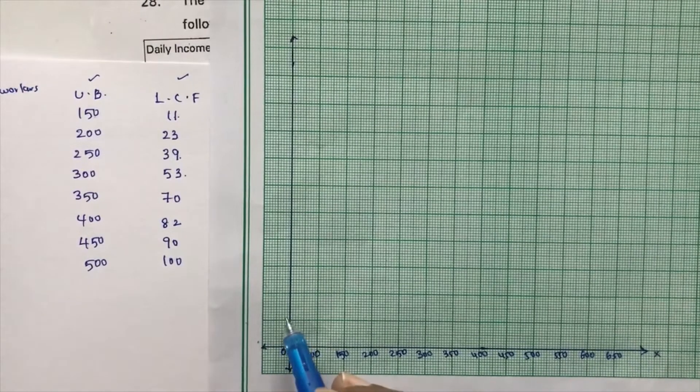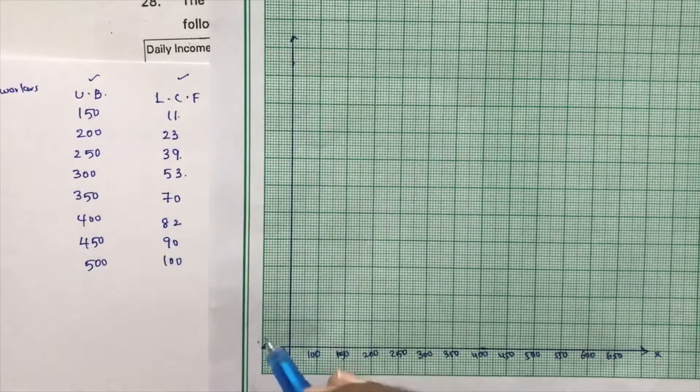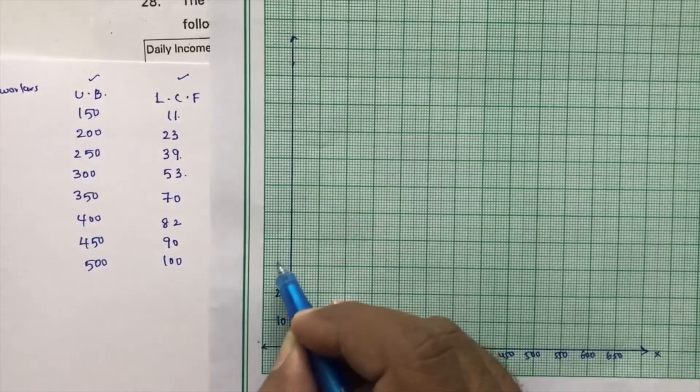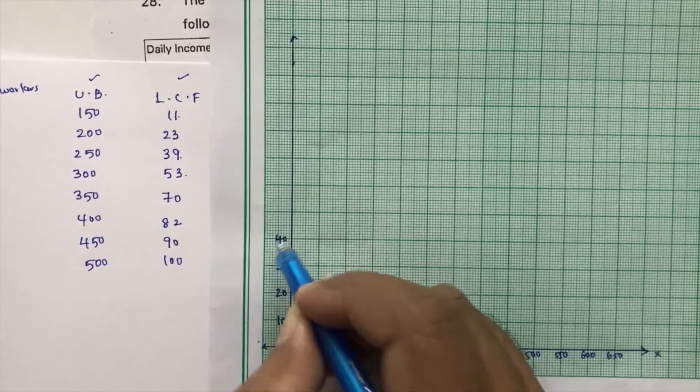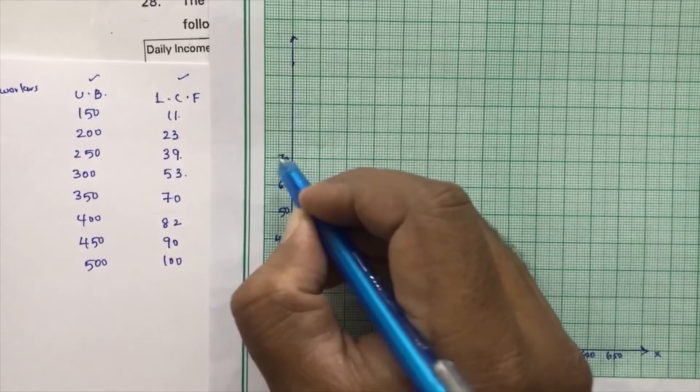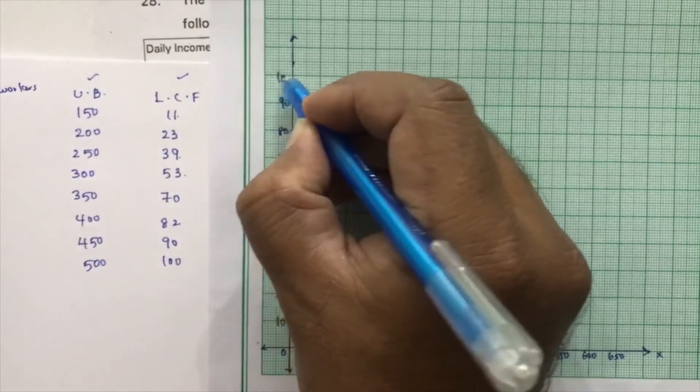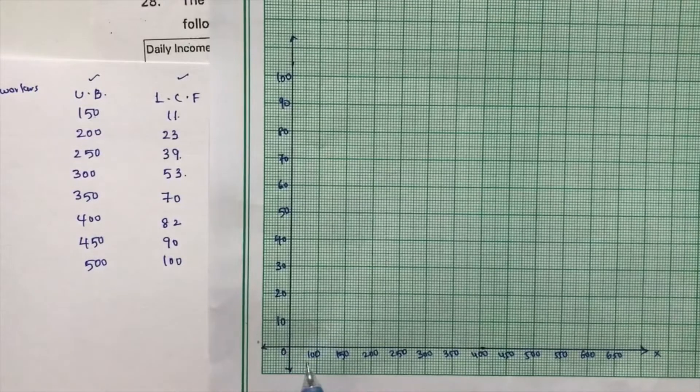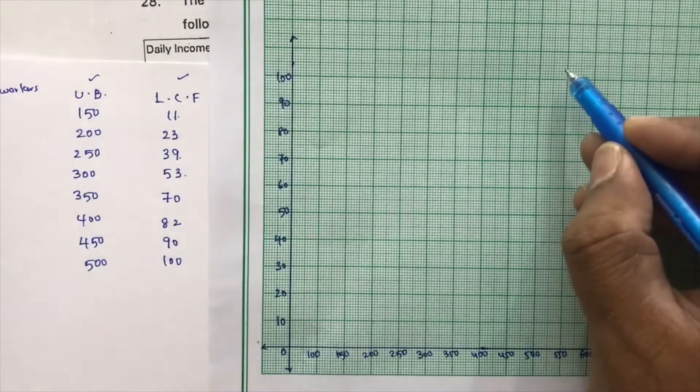And here, highest value of frequency is 100. So, y-axis take the scale as like 10 units. 10, 20, 30, 40, 50, 60, 70, 80, 90 and 100. Now, plot the values. Now see, before that, scale, compulsory we need to write scale.